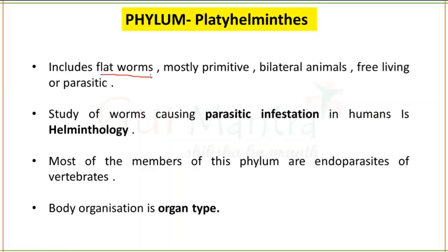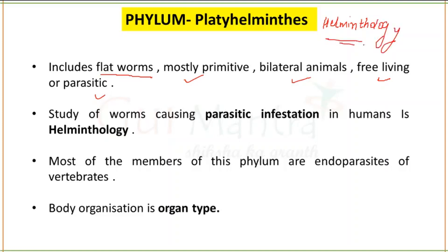Platyhelminthes are known as flatworms and they are mostly primitive, bilateral animals. They can be free living as well.